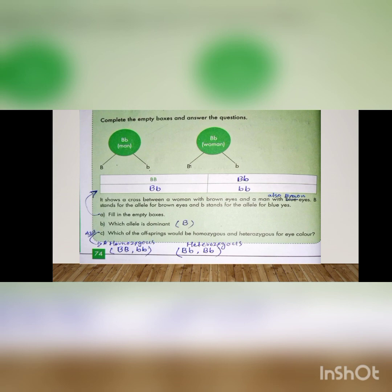Question B: which allele is dominant? Capital B is dominant. Which of the offspring would be homozygous and heterozygous for eye color? Homozygous ka matlab hai dono alleles same hon — BB ya bb. Heterozygous ka matlab hai ek capital B aur ek small b. Do offspring homozygous hain aur do heterozygous. Chapter five ka question complete ho gaya.